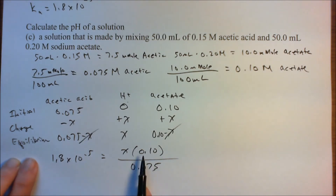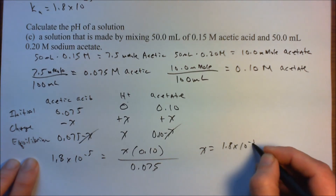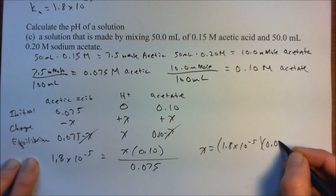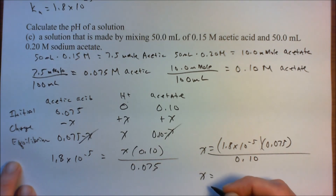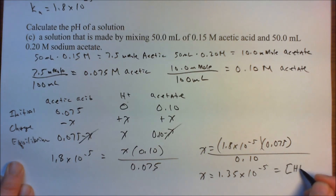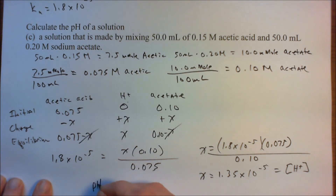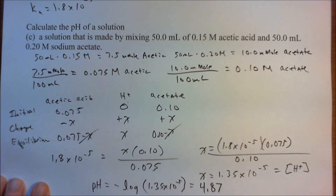Solving for X: X = 1.8 × 10⁻⁵ × 0.075 / 0.10 = 1.35 × 10⁻⁵, which equals our H⁺ concentration. The pH is then −log(1.35 × 10⁻⁵) = 4.87.